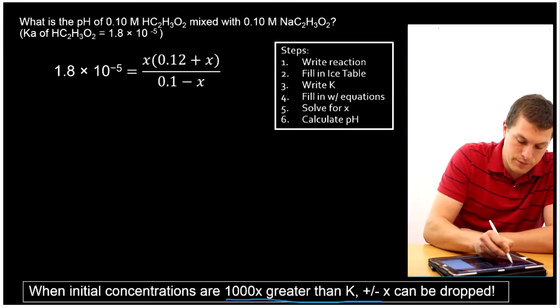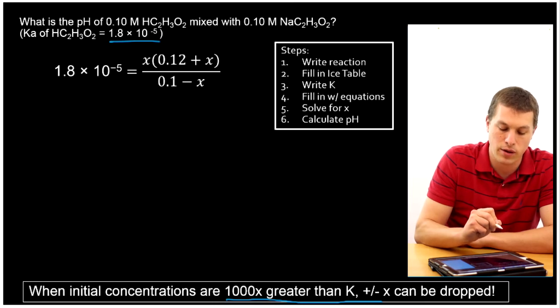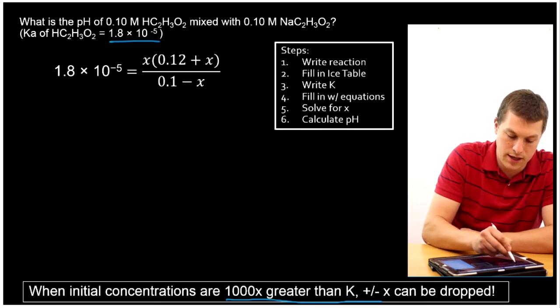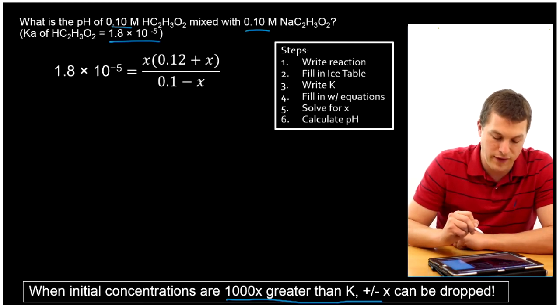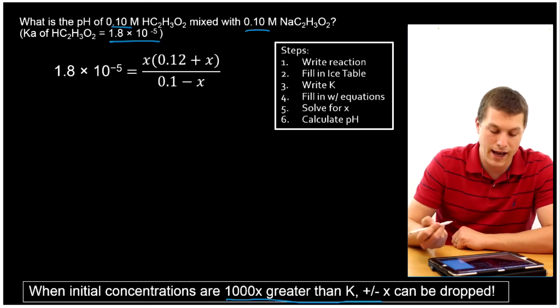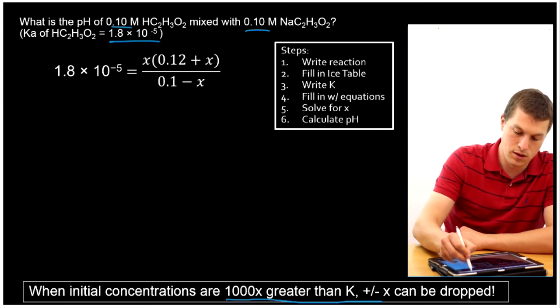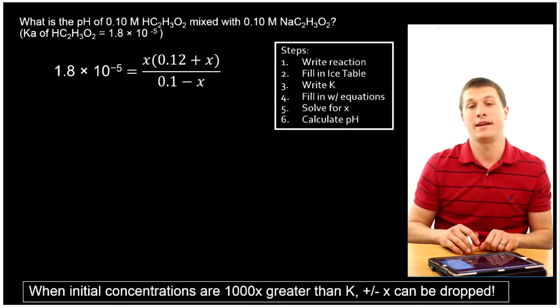I'll explain what I mean. So here's K, 1.8 times 10 to the minus 5. That is about 10,000 times bigger than either of my concentrations. Sorry, 10,000 times smaller. And so if I take my K and I multiply it by 1,000 and it's still smaller than my concentration, I can drop my X's. What that means is not that I can drop every single X I see, but wherever I'm adding an X or subtracting an X, I can get rid of it.